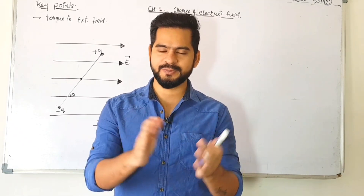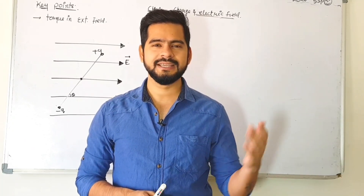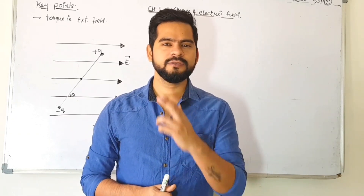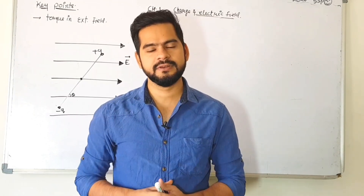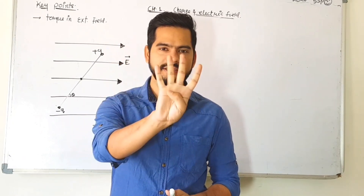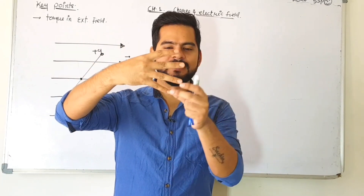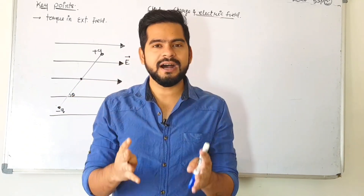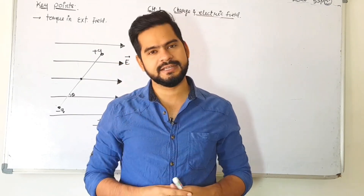So here we have parallel, I can say the parallel — uniform electric field lines and non-uniform electric field lines. First of all we will discuss what is the difference between them. For example, what you are seeing here — these are electric field lines that are equidistant from each other, and all are parallel to each other. Then these field lines are said to be uniform electric field lines.